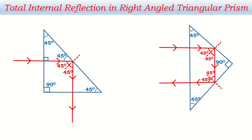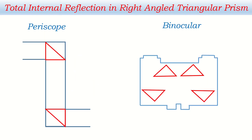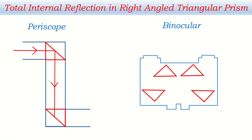Finally, when the ray reaches the last face it travels through the normal and exits straight. In this way, a right-angle triangular prism can bend light by 90 degrees in one orientation and by 180 degrees in another. These properties are used in practical devices such as the periscope and binocular. In a periscope, total internal reflection in one prism bends the light, and a second prism bends it again, allowing a person to see objects at height from a lower position.